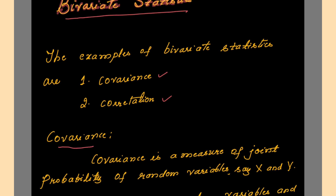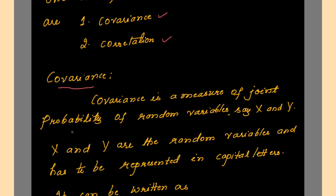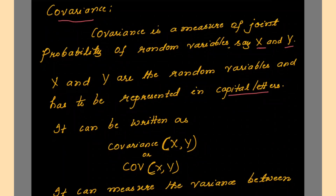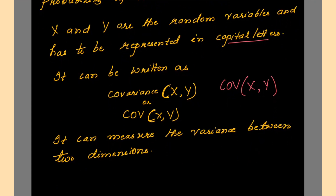The first one is covariance. Covariance is a measure of joint probability of random variables x and y. x and y are the random variables and have to be represented in capital letters. We write covariance as COV — COV stands for covariance — specifically covariance between variables x and y. It can measure the variance between two dimensions. In simpler words, covariance is a statistical measure that helps describe the relationship between two variables.